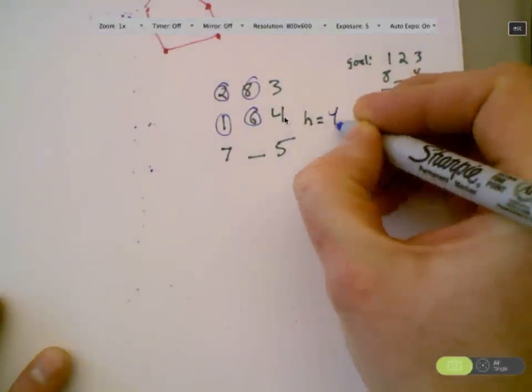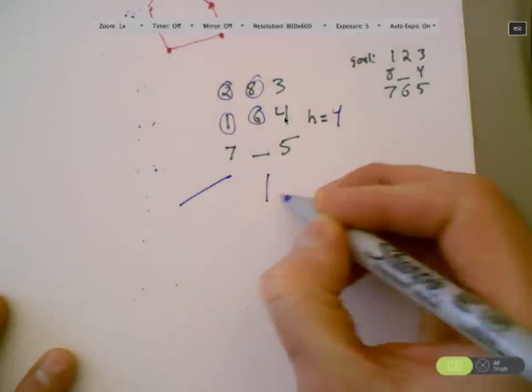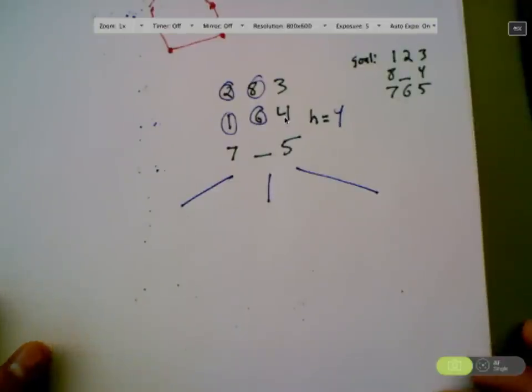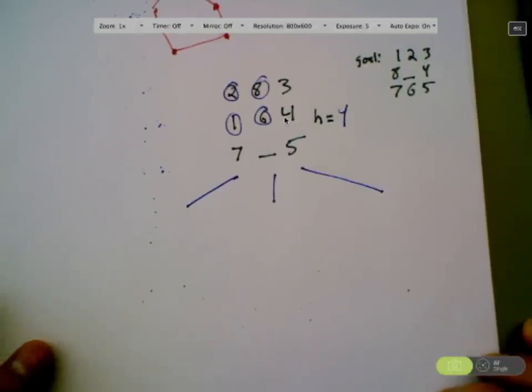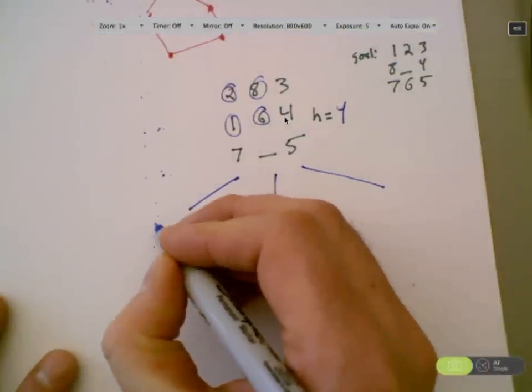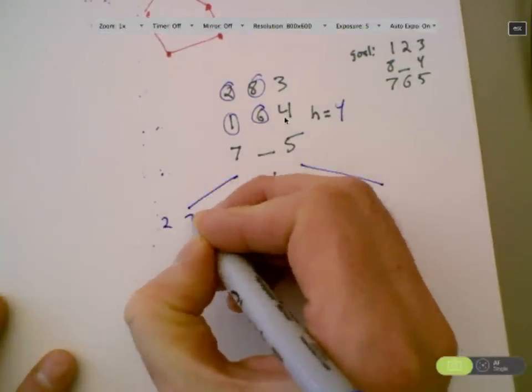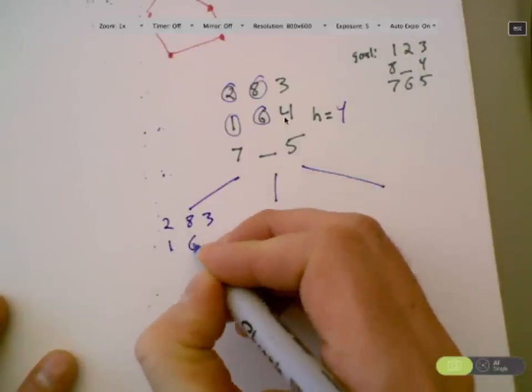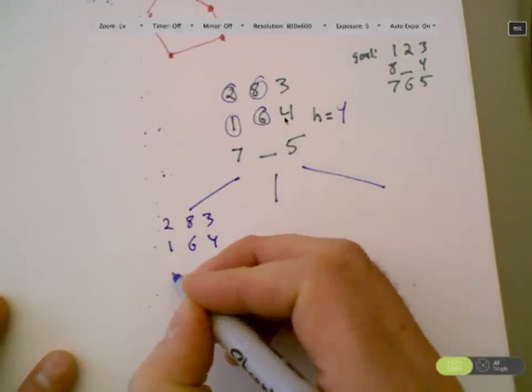So we got h equals 4 at the root. Rumor has it they're going to be three kids. Is that true? Ryan, what'd you get for one of the kids here? Just read them off to me left to right, top to bottom. 2, 8, 3, 1, 6, 4, blank, 7, 5.